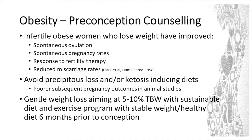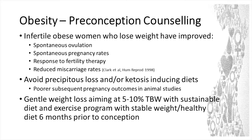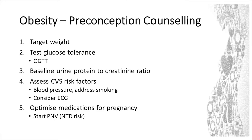A ketogenic diet in pregnancy — and this is for weight loss — does have in animal studies potential risks for fetal development. There aren't many good human studies yet, but they're coming. I'm talking about the very low-energy, no-carbohydrate type diets. So you're looking at gentle weight loss — that 5% to 10% total body weight loss with a sustainable diet and exercise program — and preferably being a bit stable for that six months prior to conception.